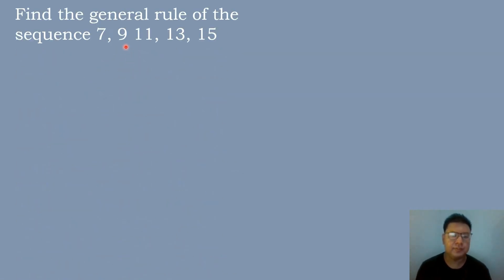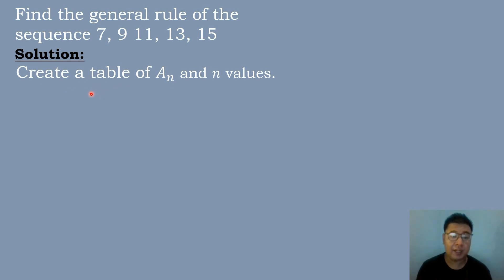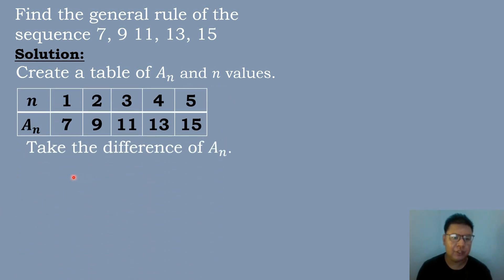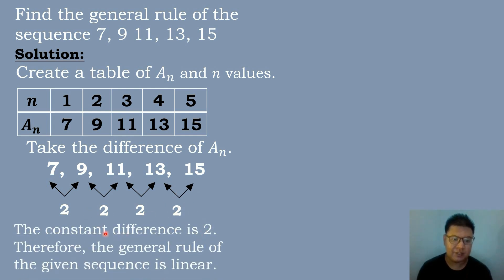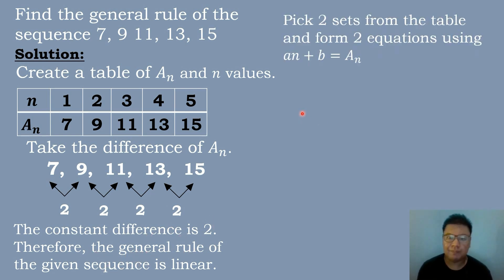Let's now have our example. Find the general rule of the sequence 7, 9, 11, 13, and 15. The first step is to construct a table of values consisting of a sub n and n. After you create the table of values, you will take the difference of a sub n. So 9 minus 7 is equal to 2, 11 minus 9 is equal to 2, 13 minus 11 is equal to 2, and 15 minus 13 is equal to 2. The constant difference is equal to 2. Therefore, the general rule of the given sequence is linear.